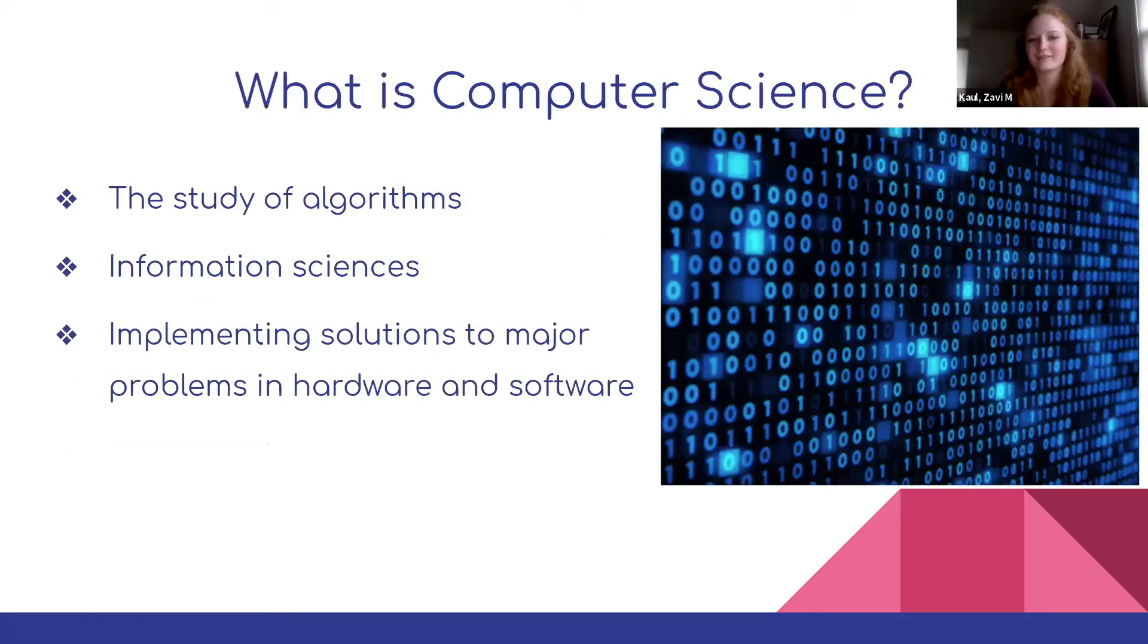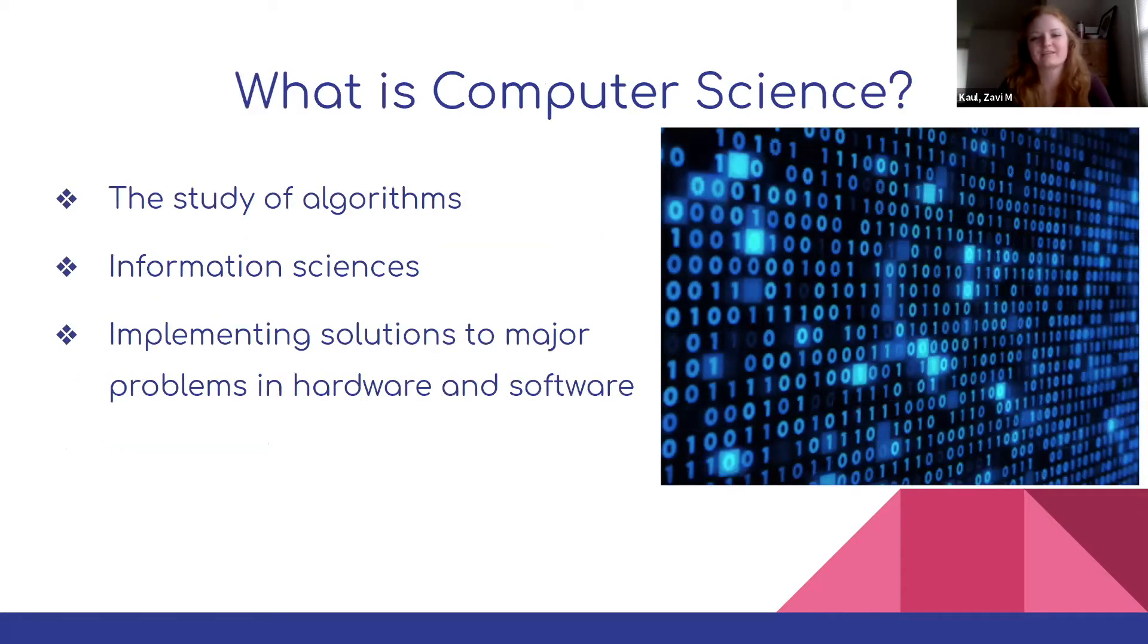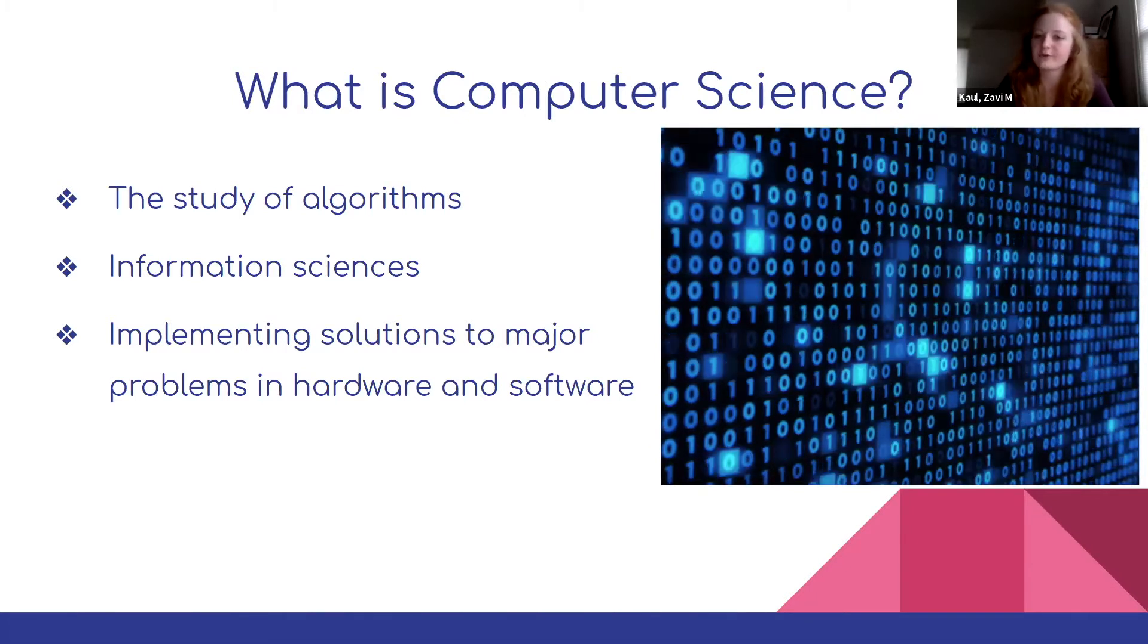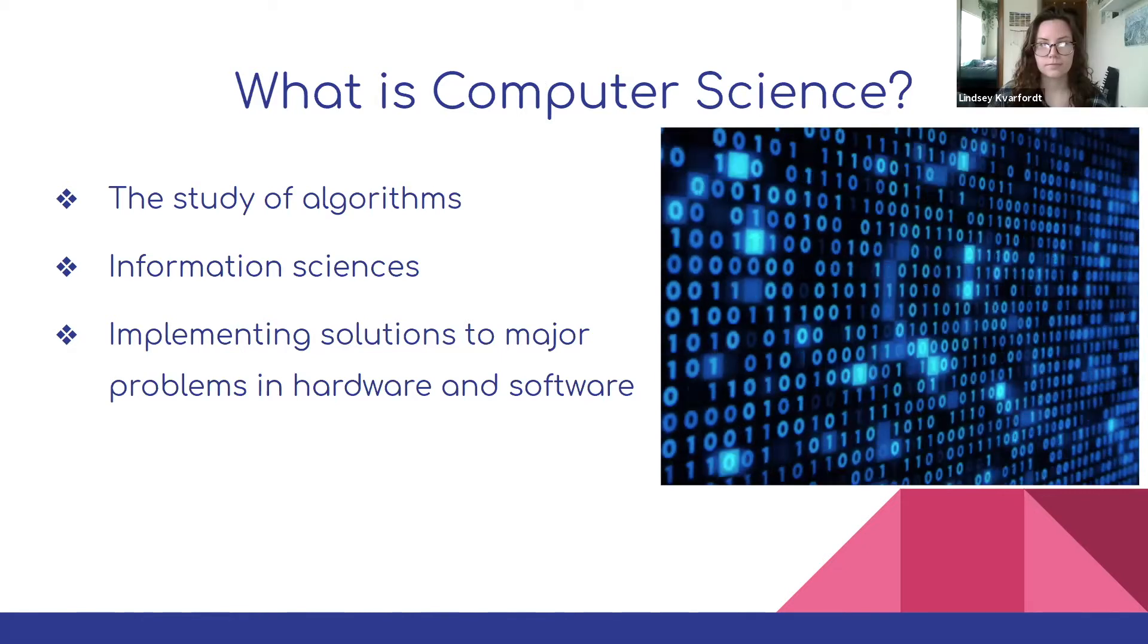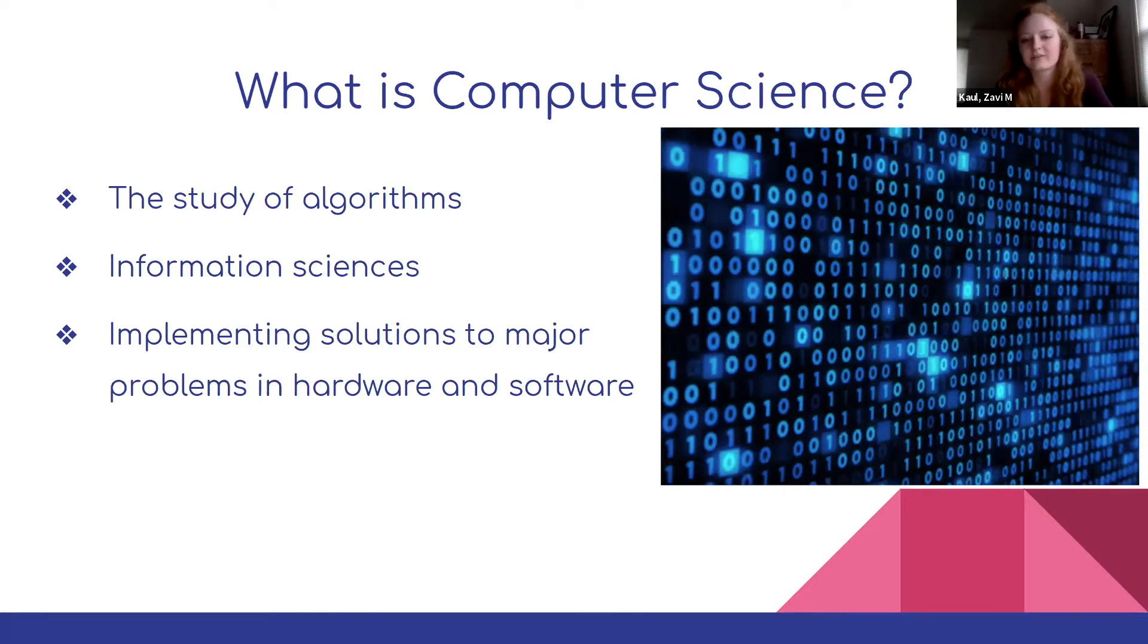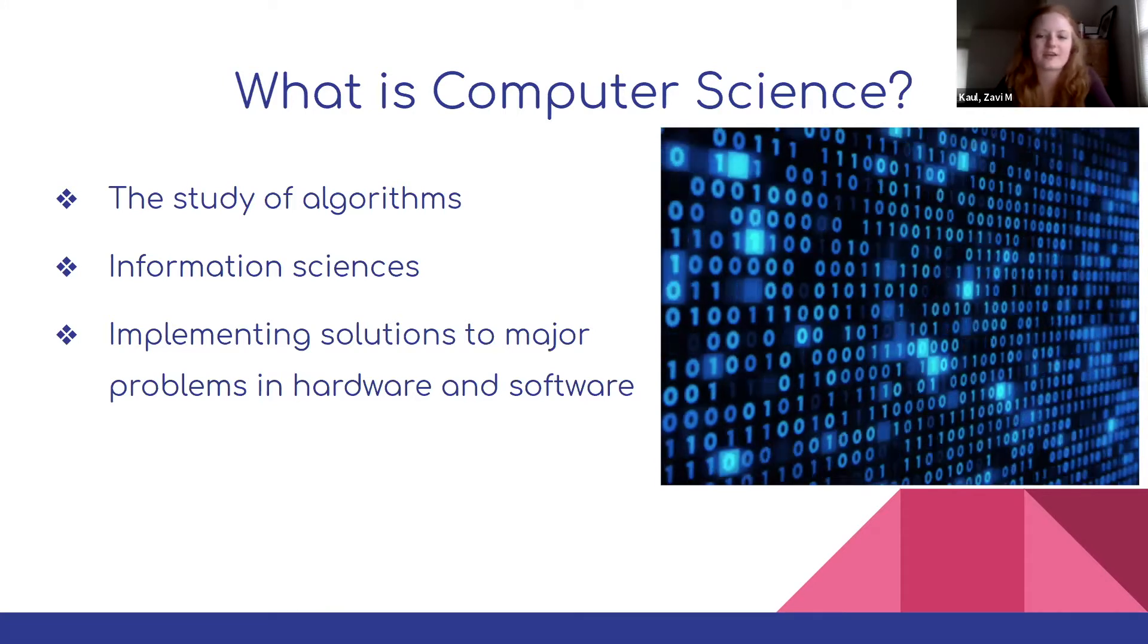So what is computer science? Computer science is the study of algorithms and how they relate to computational machines or computers. Working in computer science spans a range of jobs from analyzing and studying algorithms to implementing code to address these issues in hardware and in software. Contrary to what many major movies will tell you, computer science is not quickly typing a line into the mainframe and getting past a firewall. It's generally a methodical process of working out your specific implementation to solve a problem. It's a very creative process that requires a lot of thinking and can be super fun.